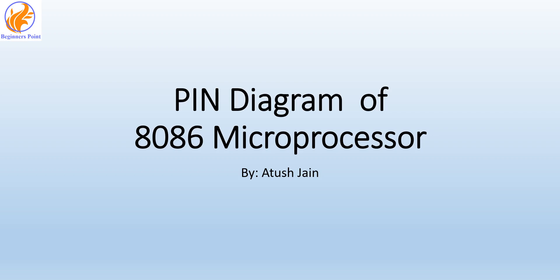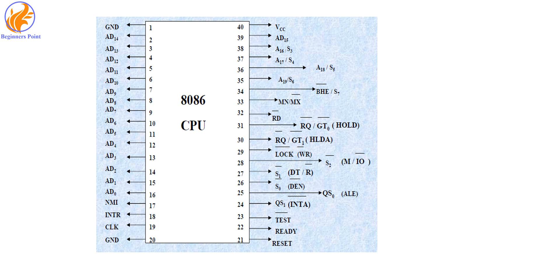Hello friends, welcome to another lecture on the pin diagram of the 8086 microprocessor. Today we are going to cover the remaining pins. This is the fifth part of this session. Till now we have covered pins 1 to 20, 21, 22, 23, 40, 39, 38, 37, 36, 35, 34, and 33. These are the general pins which work in both modes. Now we will see the functionality of some specific pins — those working in minimum mode as well as maximum mode. Pins 24 to 31 have two functionalities: one shown outside the bracket and another inside the bracket.